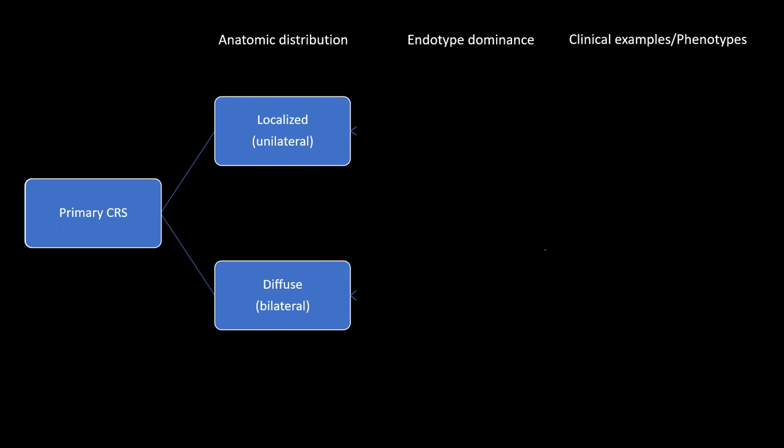Diffuse CRS doesn't mean pan-sinusitis — it just means that the inflammatory changes observed don't follow an anatomical pattern; they may be patchy and diffuse. When I say anatomical pattern, I mean they don't follow a functional anatomical pattern — so if you've got a little bit in the frontal, a little bit in the posterior ethmoid, and a little bit in the sphenoid, these are functionally separate compartments, and so you have a diffuse process. This is mostly, but not always, a bilateral condition.